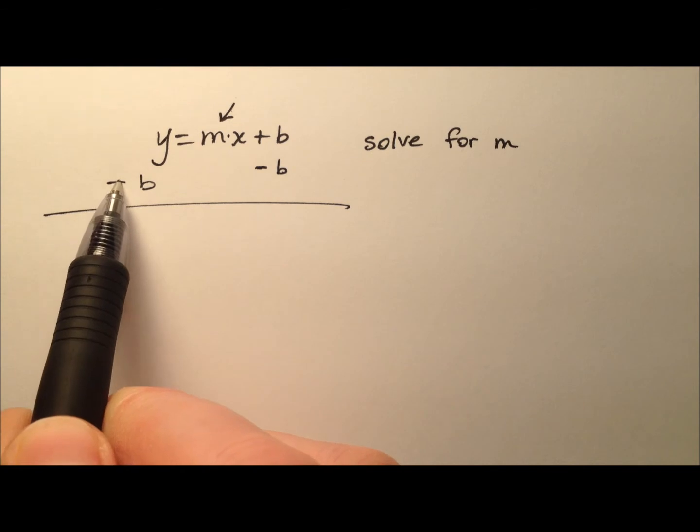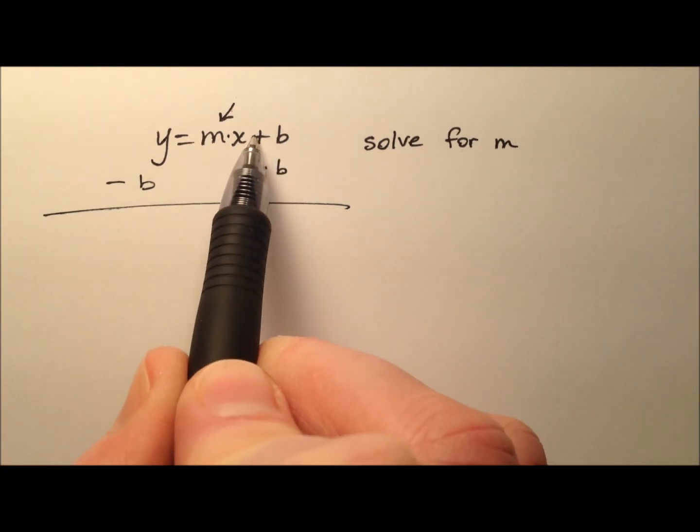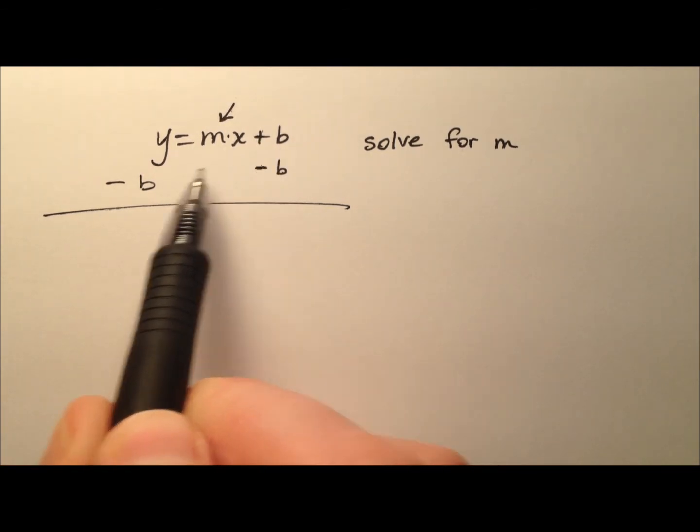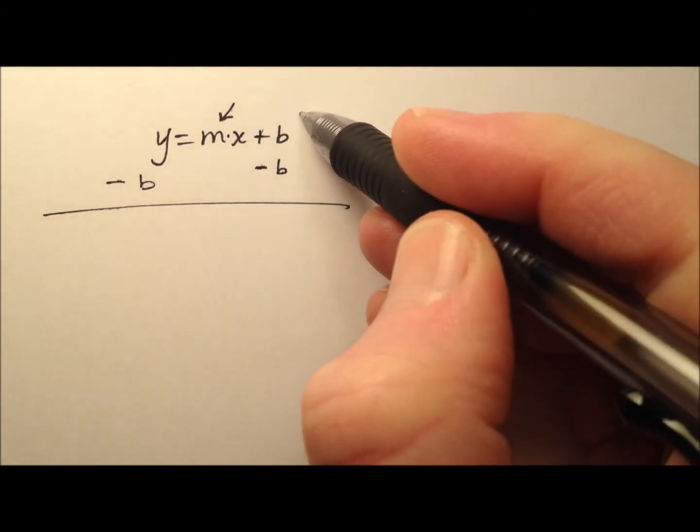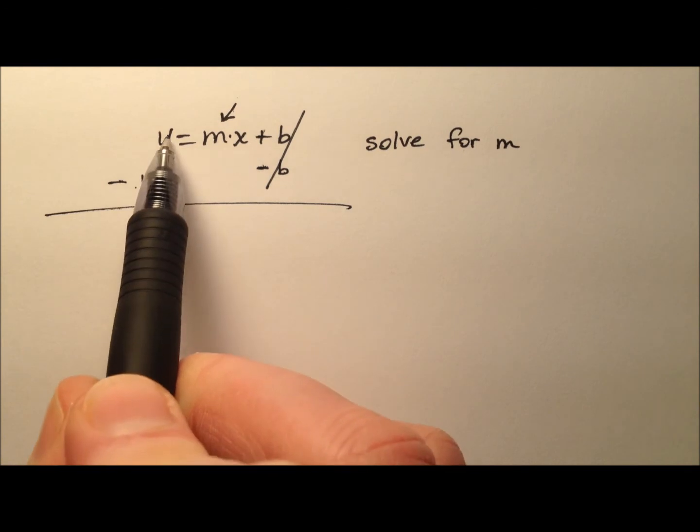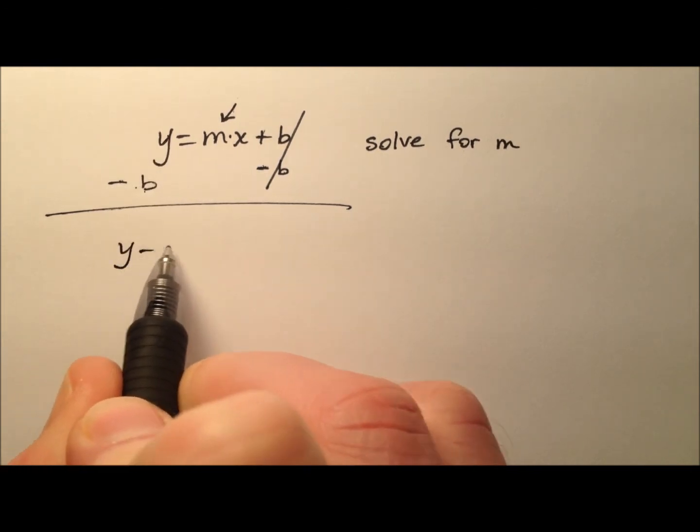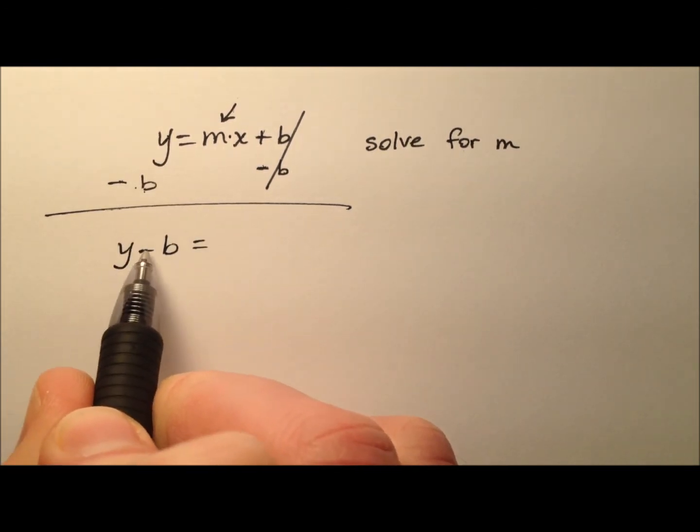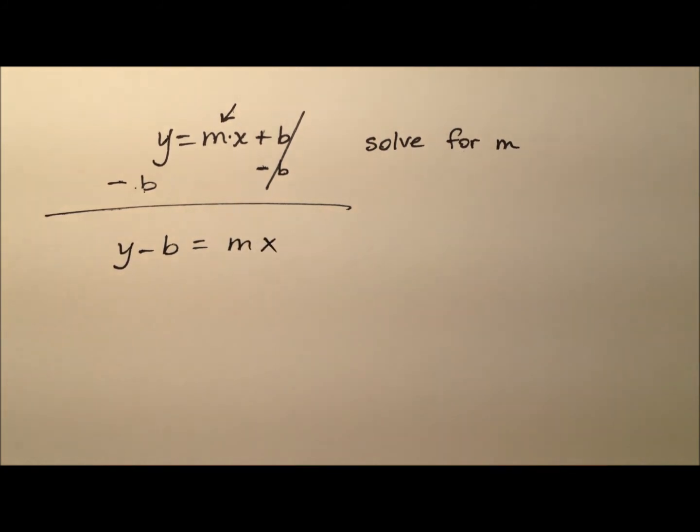So we'll use the subtraction property of equality, and we'll do the opposite of adding b. We will subtract b. So on that right side, those b's will cancel. On the left side, we have a y and a b, and they're being subtracted. So y minus b equals mx.